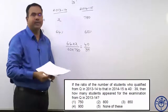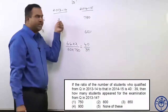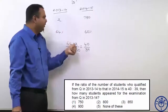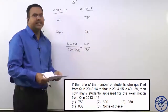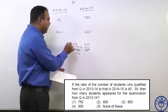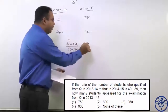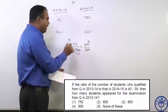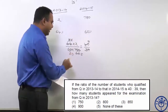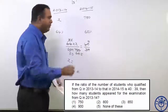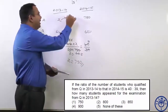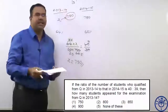So 64 percent into X divided by 60 percent into 780 equals 40 by 39. The percentages cancel. So directly: 64X divided by (60 into 780) equals 40 by 39. Cross-multiplying and simplifying — 39 goes 20 times, then cancelling 8 from 64 and 40 gives 8 and 5; then 2 goes 30 times — X equals 30 into 5 equals 150; then multiplied by a further 5 gives 750. So the number of students appeared in 2013-14 is X, that is nothing but 750. It is present in your option one.